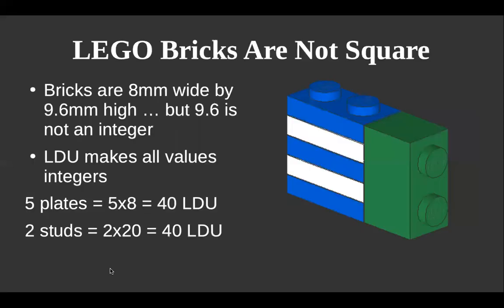We all know LEGO bricks are not square — I'm trying to embrace the word 'Legos' just to see if I can get under people's skin. LEGO bricks are 9.6 millimeters high and 8 millimeters wide. I hope that made everyone's skin crawl.